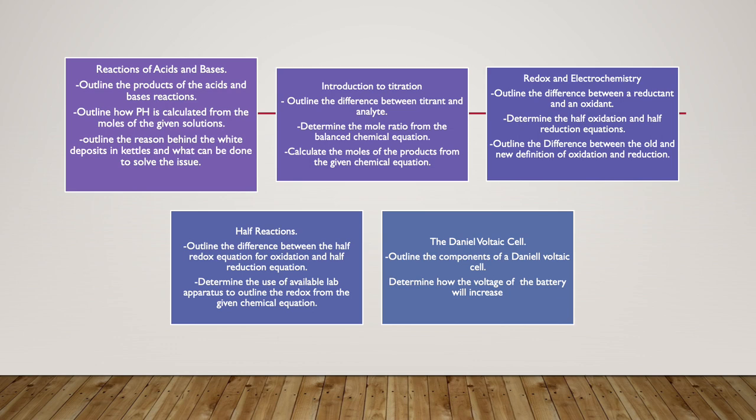On Tuesday, we will be starting with redox and electrochemistry. In that class we will be able to outline the difference between an oxidant and the reductant. We will be able to determine the half oxidation and half reduction equations, and finally we will be able to outline the difference between the old and new definition of oxidation and reduction.